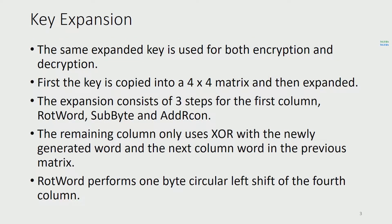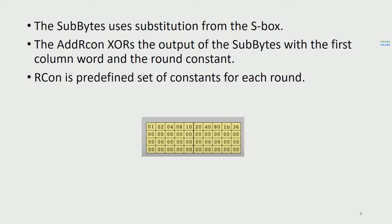The keys used for encryption and decryption are first expanded, and the same expanded key is used for both. The key is copied into a 4x4 matrix and then expanded. The expansion consists of three steps for the first column: rotation of word, substitution byte, and adding the round constant. The remaining columns only use XOR with the newly generated word and the next column word in the previous matrix. RotWord performs a 1-byte circular left shift of the 4th column. SubBytes uses substitution from the S-box. The AddRoundKey XORs the output of SubBytes with the first column word and the round constant. The round constant is a predefined set of constants for each round — 10 round constants are listed for 128-bit encryption.